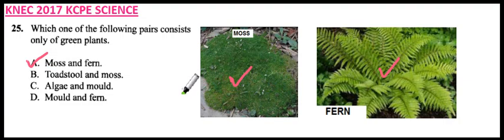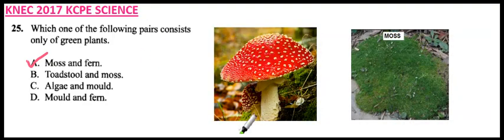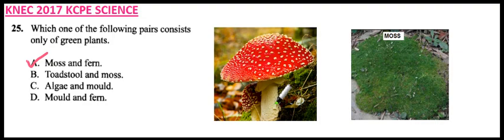Let's have a look at B: toadstool and moss. This is a toadstool and this is moss. Toadstool is a form of mushroom. You can see mushrooms are not green, and therefore B does not qualify because of the toadstool.